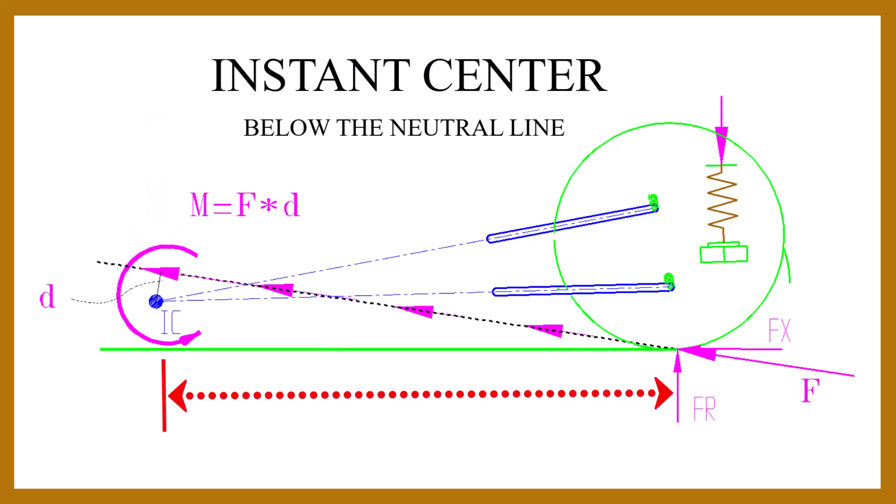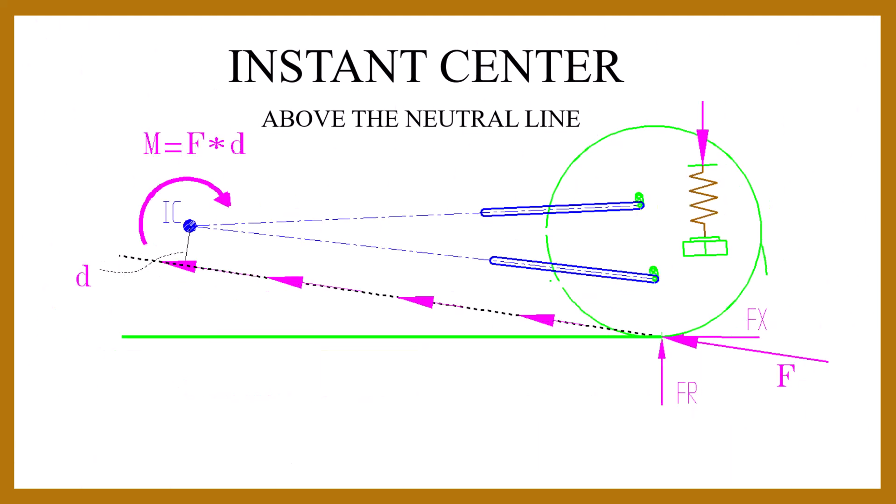The horizontal position of the instant center determines how much this lowering is distributed front to rear. When the instant center lies above the neutral line, the moment is in the opposite direction. Therefore, the vertical forces are in the opposite direction, causing lifting of the chassis at the instant center. This is called separation and raises the rear of the chassis upon acceleration.